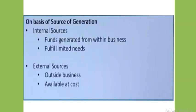On the basis of generation, the sources can be classified into two parts: first, internal sources, and second, external sources. Internal sources include all the sources which are generated from within the business. For example, retained earnings. It can fulfill only limited financial needs of the business. External sources include all the sources that lie outside an organization. For example, issue of debentures, borrowing from commercial banks and financial institutions. External sources help to raise large amounts of funds but are costly as compared to internal sources. In some cases, assets are also required to be mortgaged.